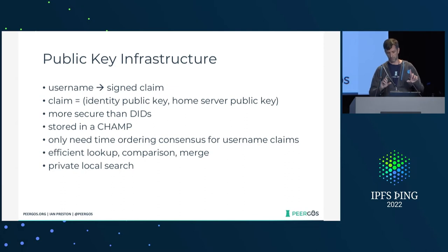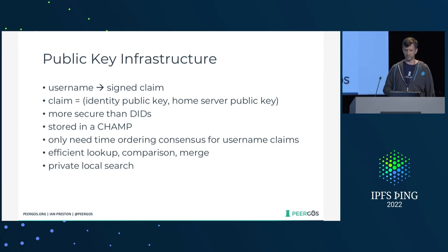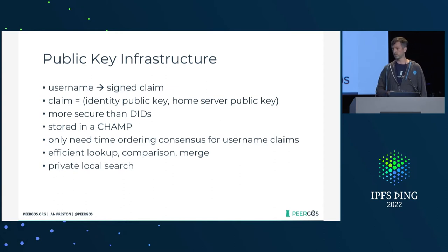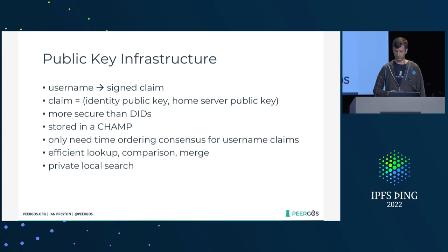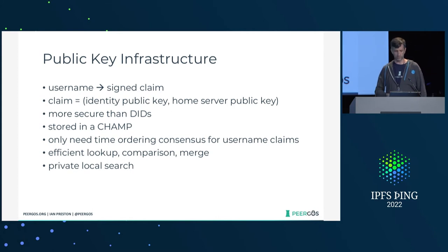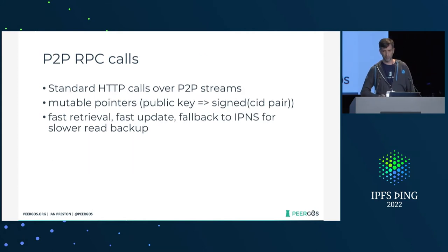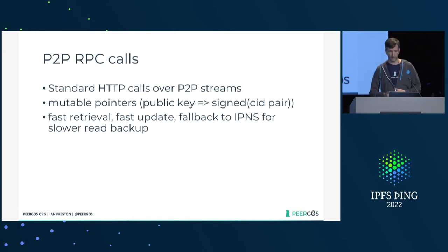All this CHAMP data is mirrored on every instance, so you get private local search if you're trying to connect with a new friend — which is super important for something that's social. And once you've got the identity of the person whose data you're trying to get, or to log in, from the PKI, what do you do next?